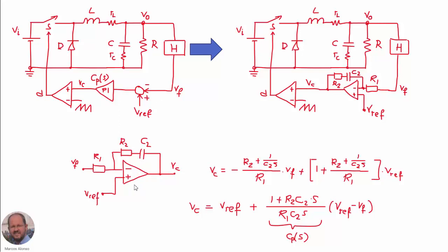Let's analyze the implementation with the operational amplifier. We have the circuit, and we can get the expression using the superposition principle. If we inject the signal VF here and consider zero at the reference point, we get the expression of the inverting amplifier implemented with an operational amplifier. If we then consider zero voltage at the feedback input and inject a signal at the reference point, we have the gain of the non-inverting amplifier times the voltage Vref.